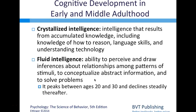Cognitive development in early and middle adulthood involves two kinds of intelligence. Crystallized intelligence results from accumulated knowledge—including reasoning skills, language, and understanding of technology—and increases with age. Fluid intelligence is the ability to perceive and draw inferences about relationships among patterns of stimuli, conceptualize abstract information, and solve problems; this type peaks between ages 20 and 30 and declines steadily thereafter.